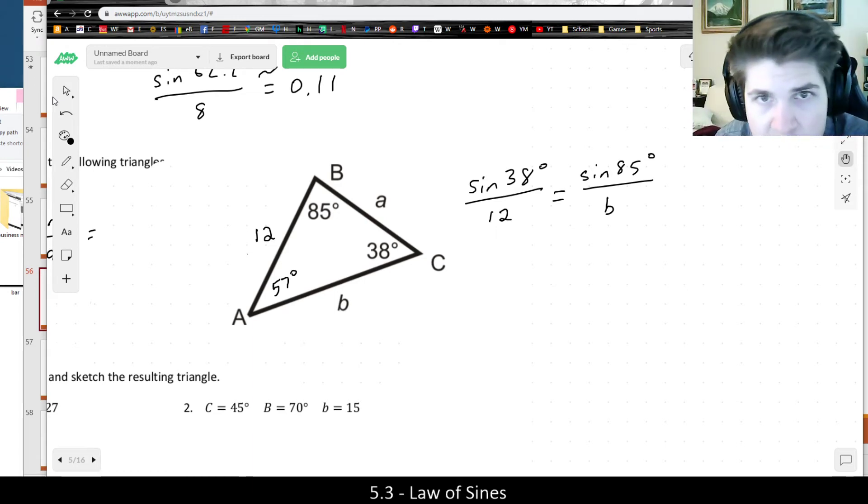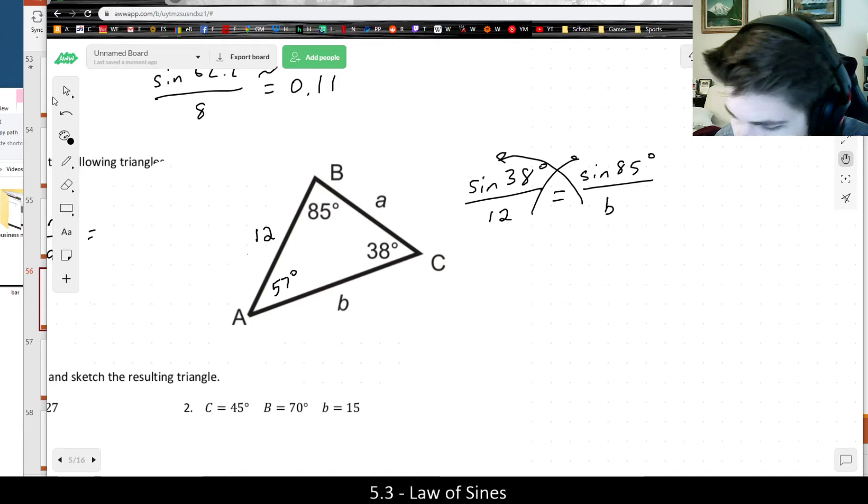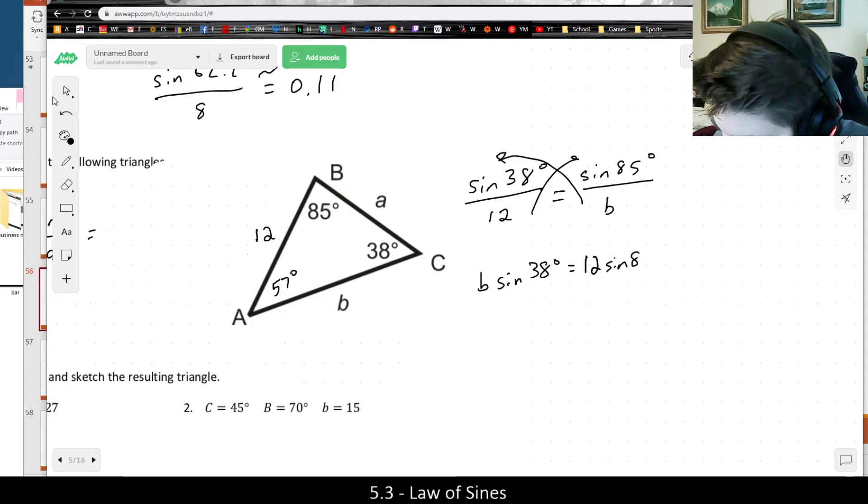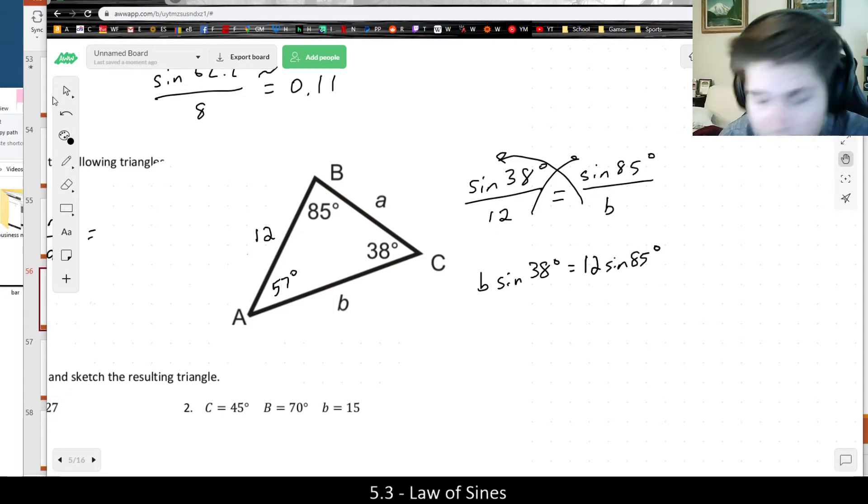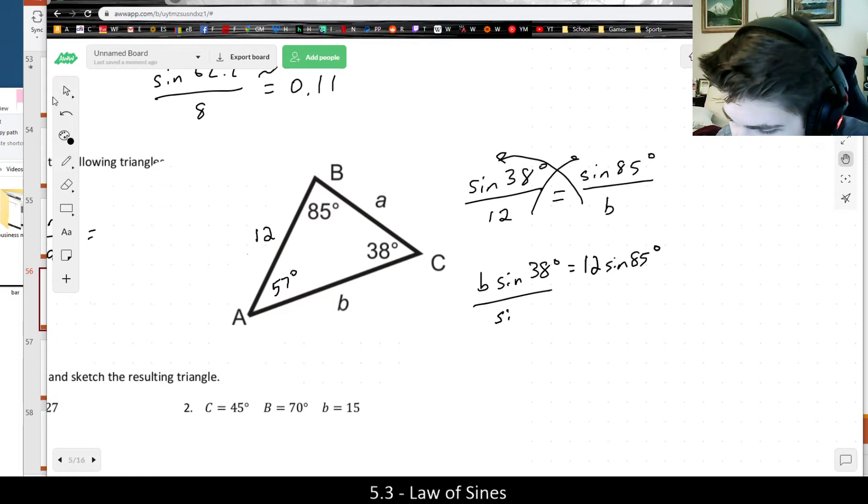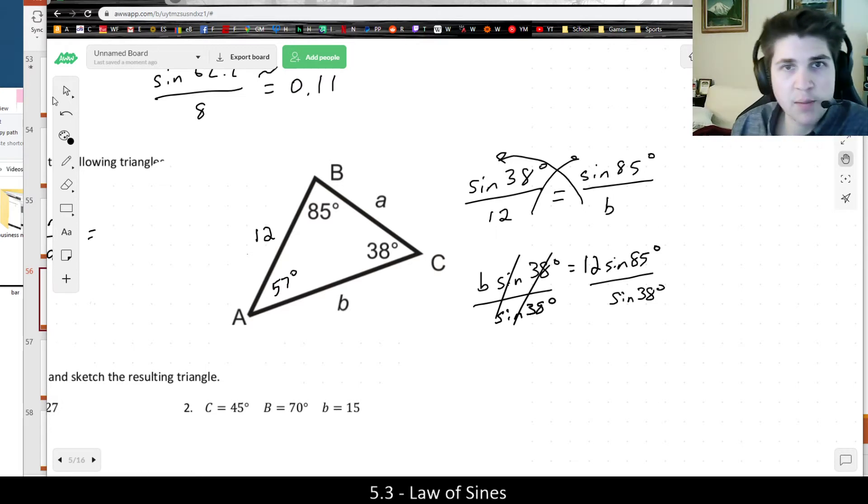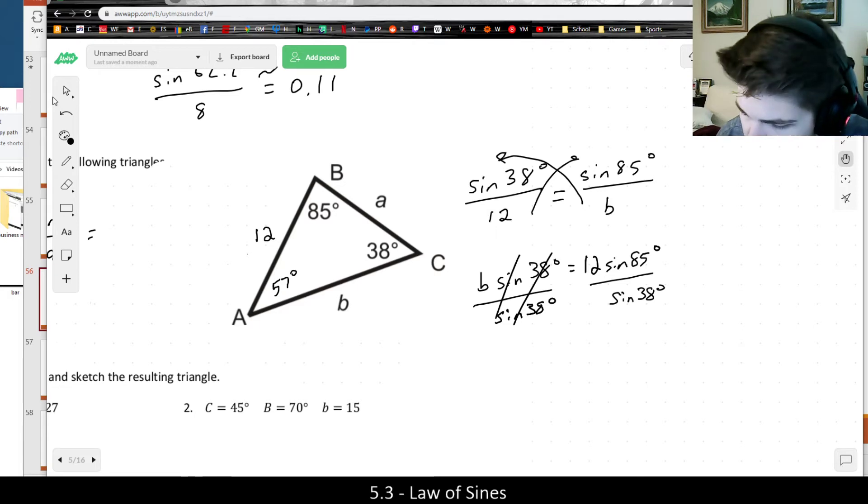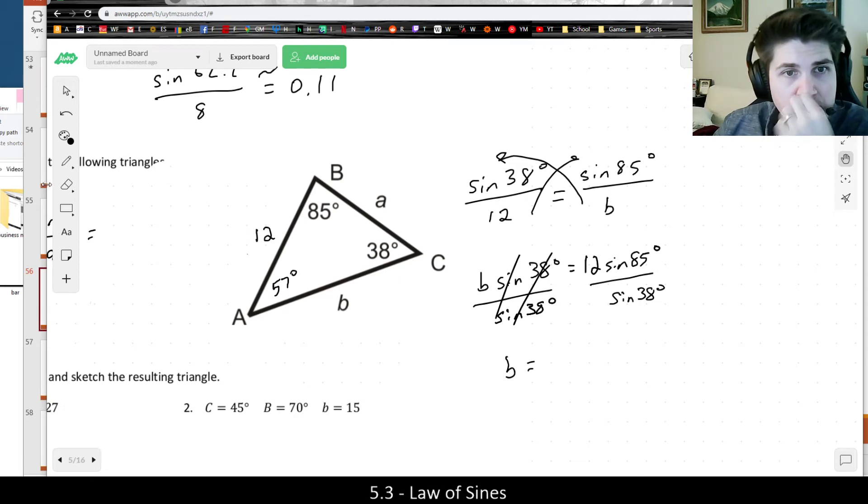And so since it's a proportion, I could use cross multiplication to begin with. So if I cross multiply, that would leave me with B times the sine of 38 is equal to 12 times the sine of 85. And then I could divide both sides by the sine of 38. So to cancel the sine 38, I could divide, which would leave me with side B, which is the ratio 12 times sine 85 divided by sine 38.